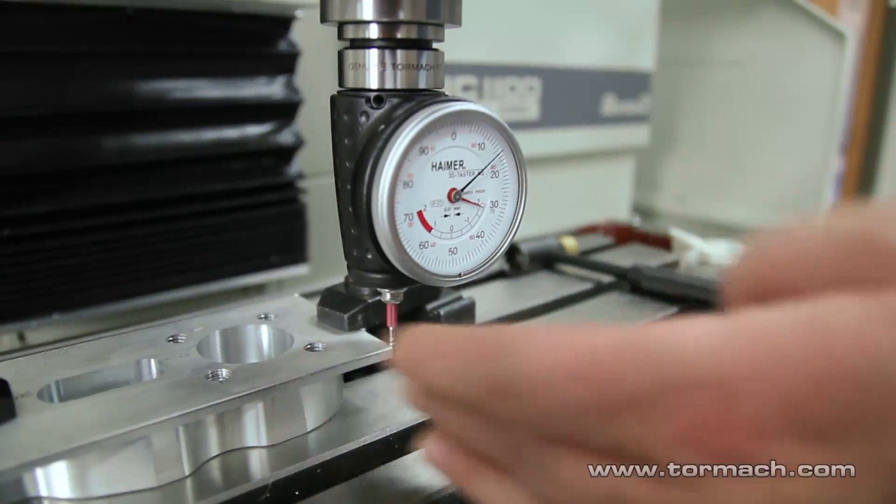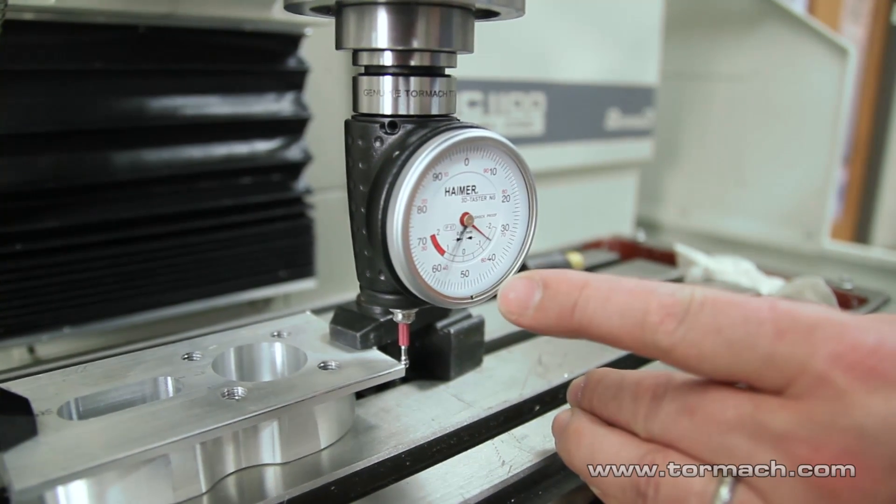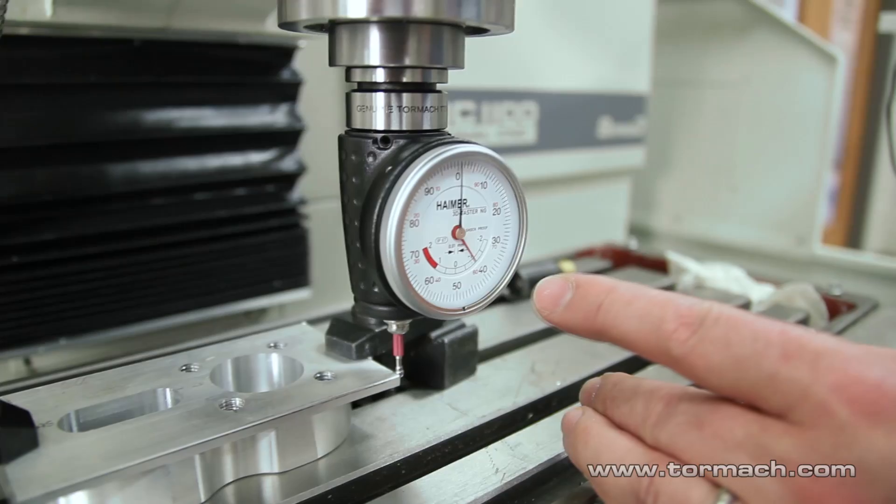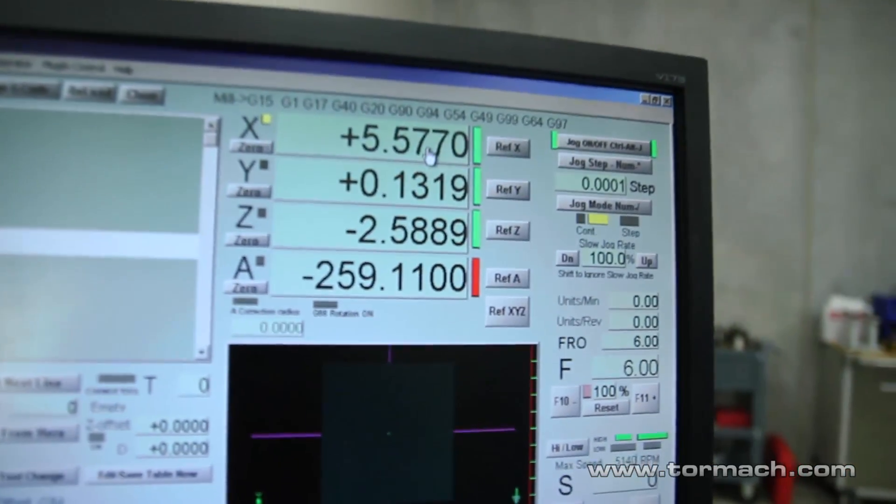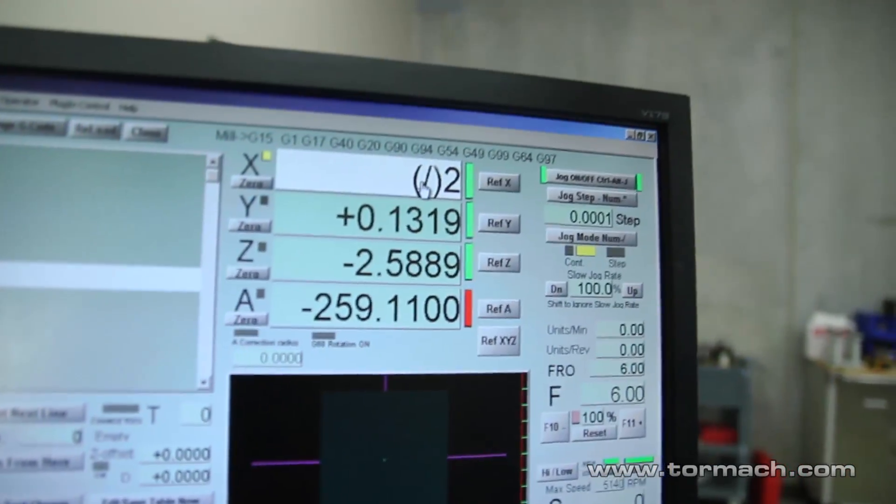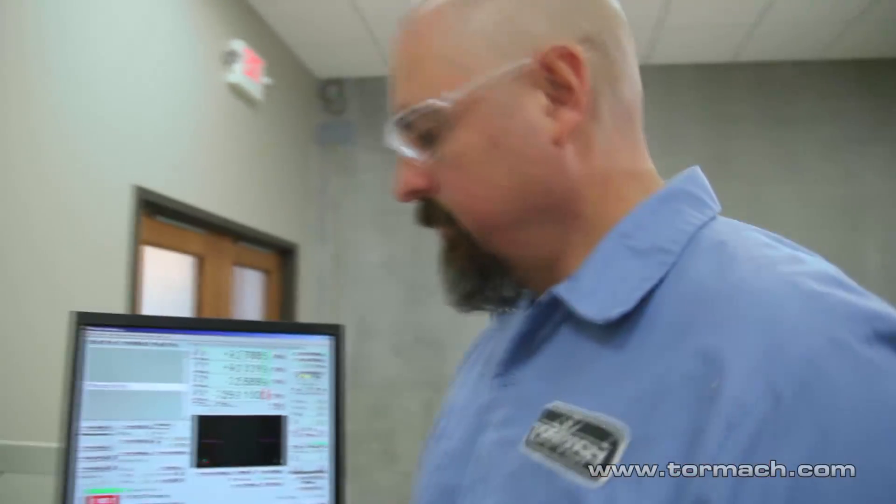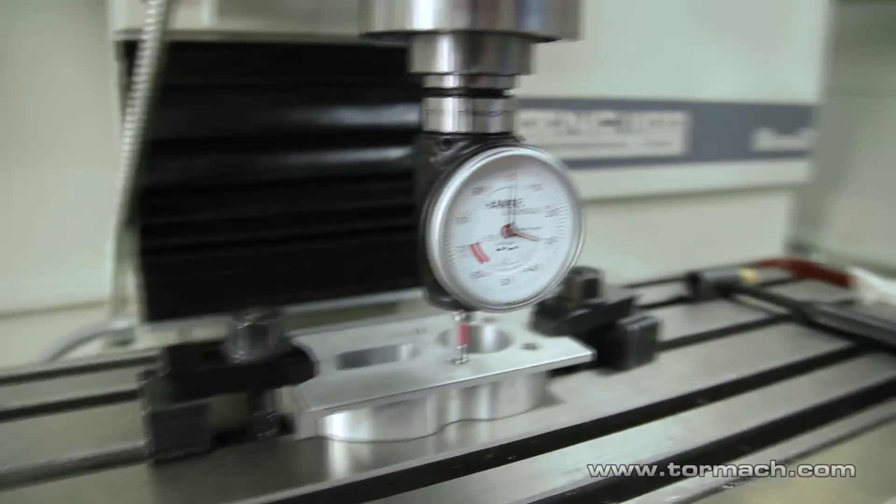And then on this side of the part, I'll just do one revolution. And then divide that overall number by two. And that's going to be my X center. Okay. And then we can do the same in Y.